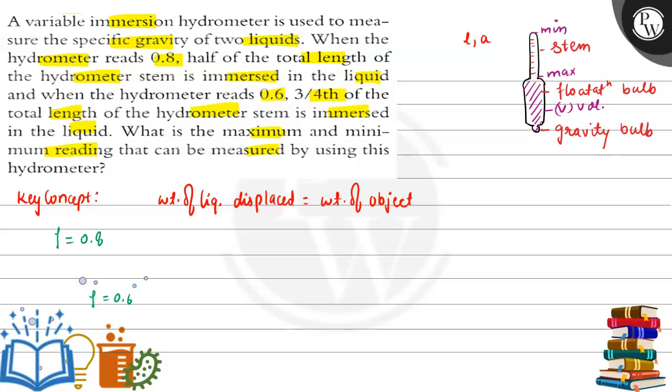We know that formula for weight here is rho G multiplied by V. Rho in this case is 0.8. Volume here will be flotation volume plus gravity bulb. Here in this case, it is said that half of the total length of hydrometer stem is immersed. That means area of cross-section is A, length is L by 2, this is equal to weight of the object.